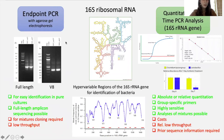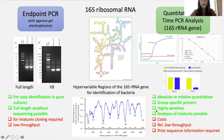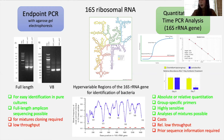Endpoint PCR is really easy for identification of pure cultures and allows for full-length amplicon sequencing. However, you have to clone mixtures and it's low-throughput. Quantitative PCR offers absolute or relative quantification, group-specific primers, is very sensitive, and allows mixed analysis. However, it's more cost-prohibitive, still relatively low-throughput, and requires prior sequencing.